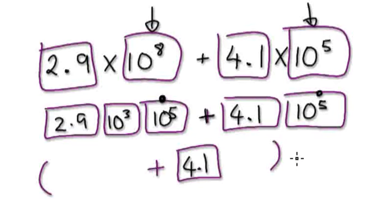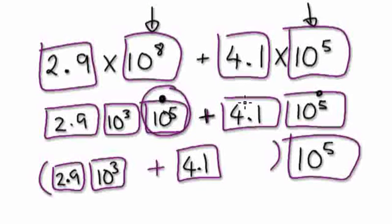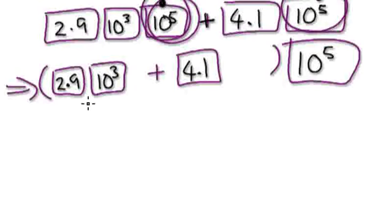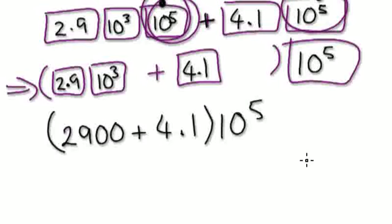So you've got your 4.1 here. Over here you would have 2.9 times 10 to the power of 3. Outside of the brackets would be 10 to the power of 5, because this is common, this is in common, this is in common — you can actually take them out. So now it's just a matter of working out what's inside the brackets. Let's convert this to 2.90 plus 4.1, times 10 to the power of 5.